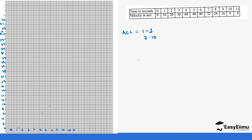Now let's plot the points. At time zero, velocity is also zero, so the first point is at the origin. At minute one, velocity is ten. At minute two, velocity is twenty. At minute three, velocity is thirty. At minute four, velocity is forty.